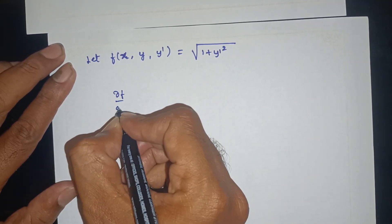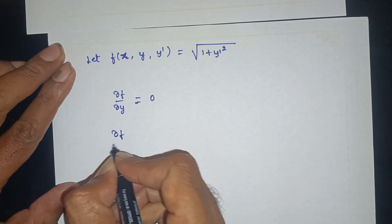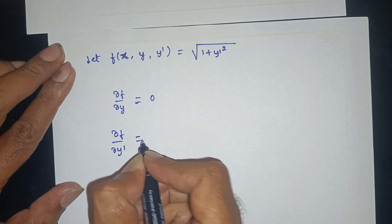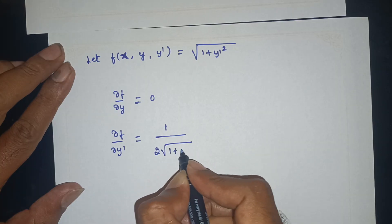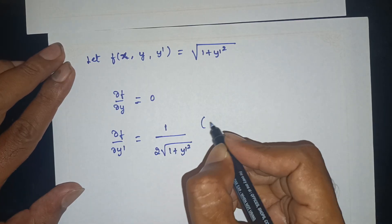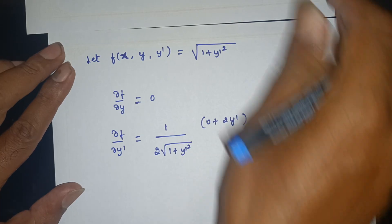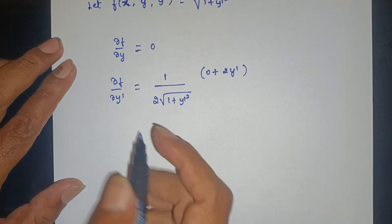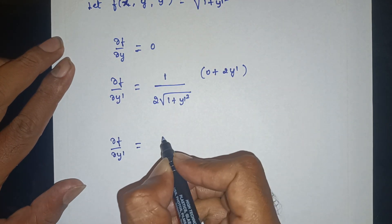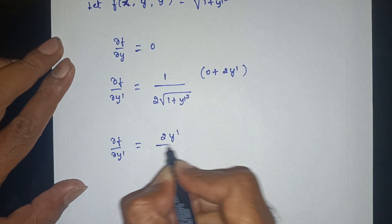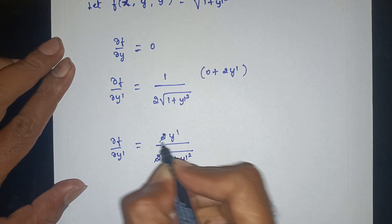Now compute the partial derivatives. ∂f/∂y = 0, since f does not depend on y explicitly. For ∂f/∂y', differentiate sqrt(1 + y'²) to get (1/2) * (2y') / sqrt(1 + y'²) = y' / sqrt(1 + y'²).